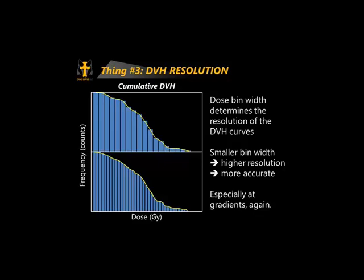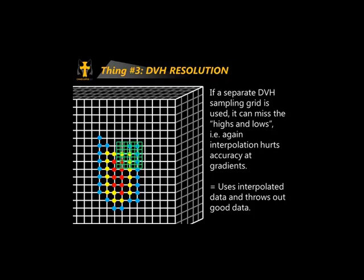There can be another problem besides bin width — at least in some planning systems. If a separate DVH sampling grid is used, what that means is there's already a three-dimensional dose grid, but some planning systems put an additional grid and count out interpolated dose values at a different resolution. You may completely step over actual dose points — and those dose points are the only ones we knew accurately. This uses interpolated data and throws out good data, just making more and more approximations.